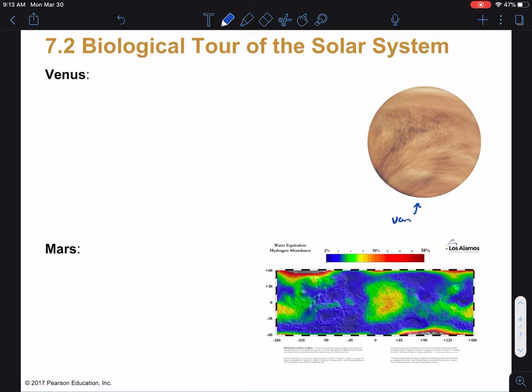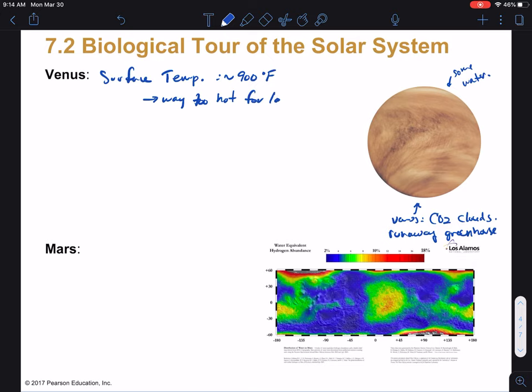We can move on to Venus and Mars. Venus here—what you're seeing in this picture, this is Venus with CO2 clouds, so the clouds are carbon dioxide, maybe some water up there in the higher part of the atmosphere. Part of the problem with Venus here is that the CO2 clouds cause it to have a runaway greenhouse effect here. And so the surface temperature of Venus is roughly 900 degrees Fahrenheit. Now that's hot enough to melt lead, so it is way too hot for liquid water at the surface.